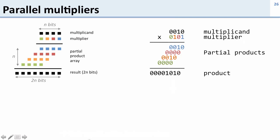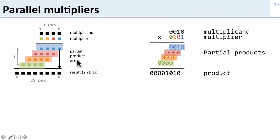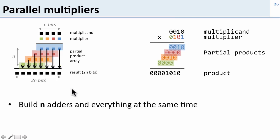Now when we look at parallel multipliers, we said we have this big array of products which is going to have a lot of adders. You can see where these adders come from — we're adding in the first part, the second part, third part, and the fourth part, all together. So this is going to be one bit added here, two bits added here, three bits added here, four bits added here, etc. All of these are adders that we put together. We need to build a whole bunch of adders to add everything up at the same time. This is going to be faster because we can do it all at the same time, but much larger.